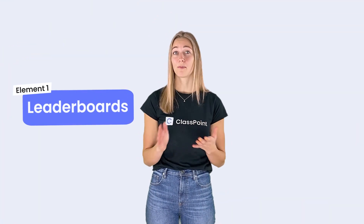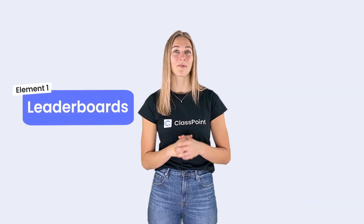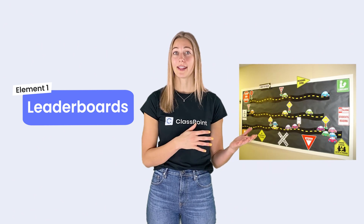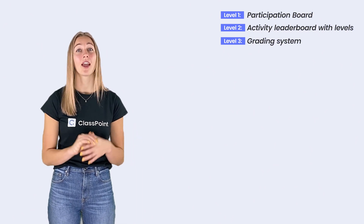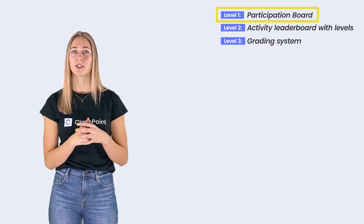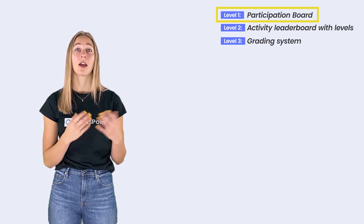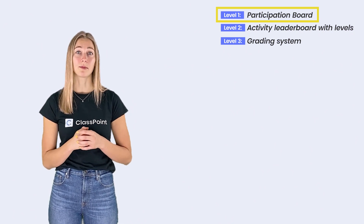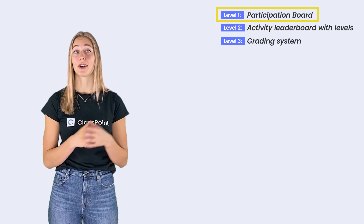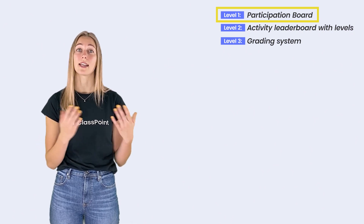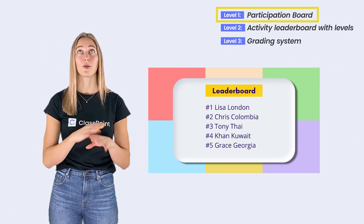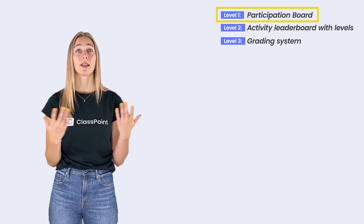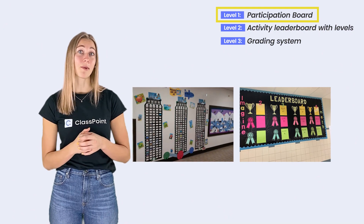Start out easy with a point system and a student leaderboard. You can turn those daily activities into student progress boards, or you can take it a couple of steps further and completely change your grading system. The first level of this is just doing a simple participation board — points can just be based off student participation, then totaled up and put into a leaderboard. You can display your leaderboard as a slide in your presentation with PowerPoint or Google, put it on your Google Classroom banner, or if you're in the physical classroom, just throw it up on a bulletin board.